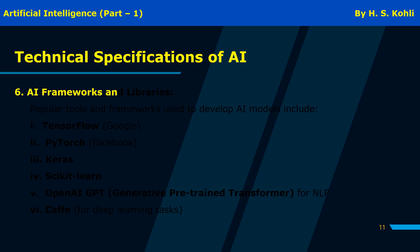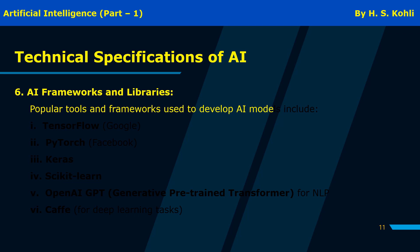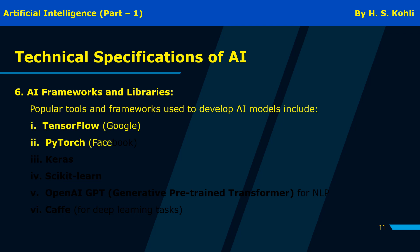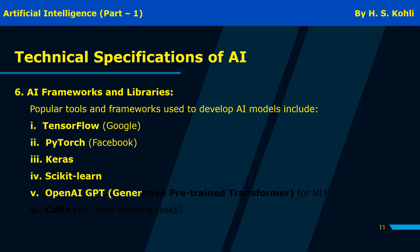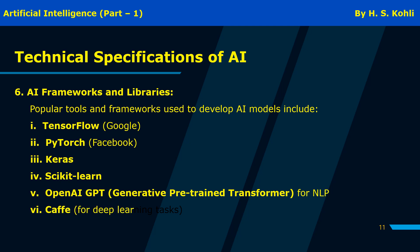Popular AI frameworks and libraries used to develop AI models include: TensorFlow by Google, PyTorch by Facebook, Keras, Scikit-Learn, OpenAI GPT (generative pre-trained transformer) for NLP, and Caffe for deep learning tasks.